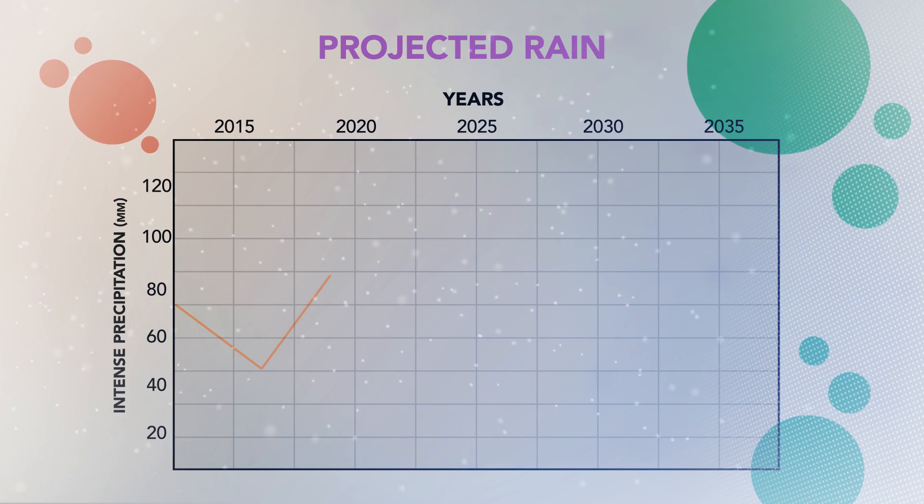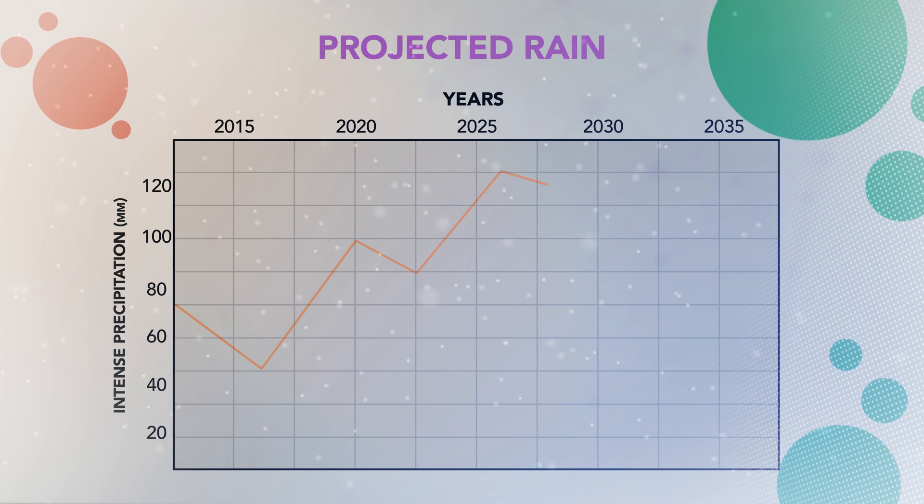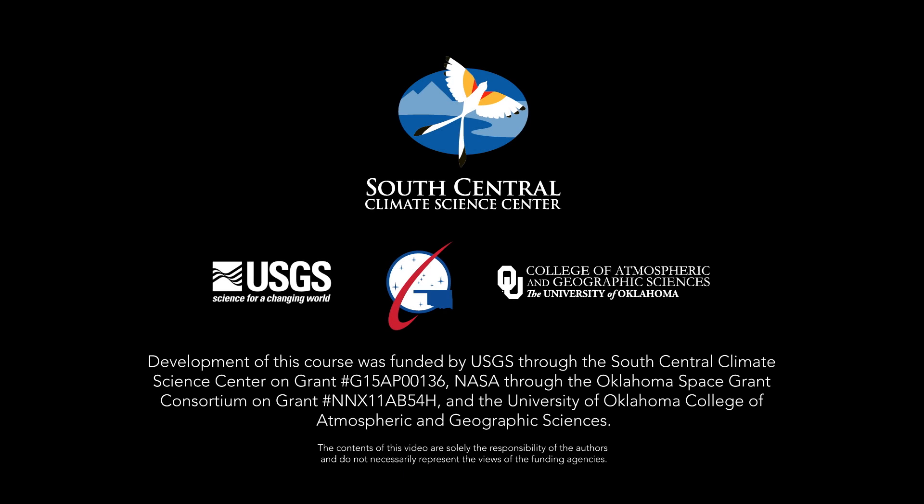These two regional approaches provide climate change projections at the scales that you, as a city planner, can use to make decisions. For example, you may find that your region is projected to have an increase in the frequency of intense precipitation events in the next several decades, and you may need to build new infrastructure or adapt existing infrastructure to mitigate potential flooding. Even with detailed regional climate projections, there are also limitations and uncertainties associated with them that you need to understand. The remaining videos in this series will discuss details of these limitations and uncertainties. Thank you.